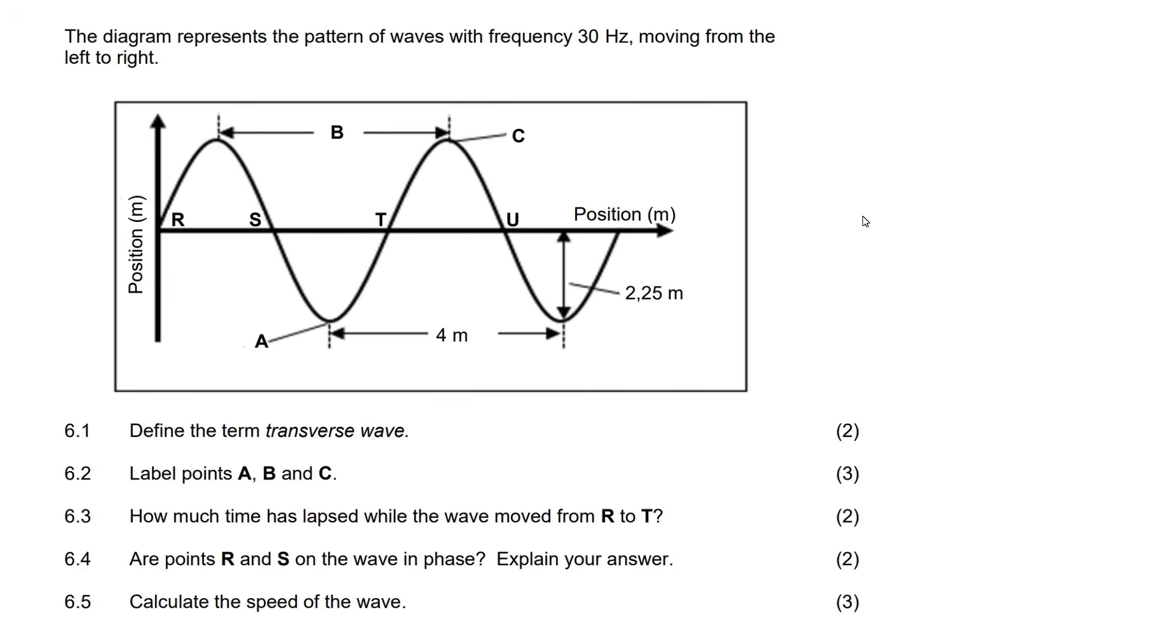The diagram represents the pattern of waves that have a frequency of 30 Hz. What is frequency? Can we remember? Frequency is number of waves per second. So that means in one second, there will be 30 waves. And a wave goes the up and the down path - that is a wave. In this question, there are actually two waves that we can see. So frequency means number of waves per second. In one second, if you were standing over here, you would see 30 of those waves coming past. So they're moving quite quick.